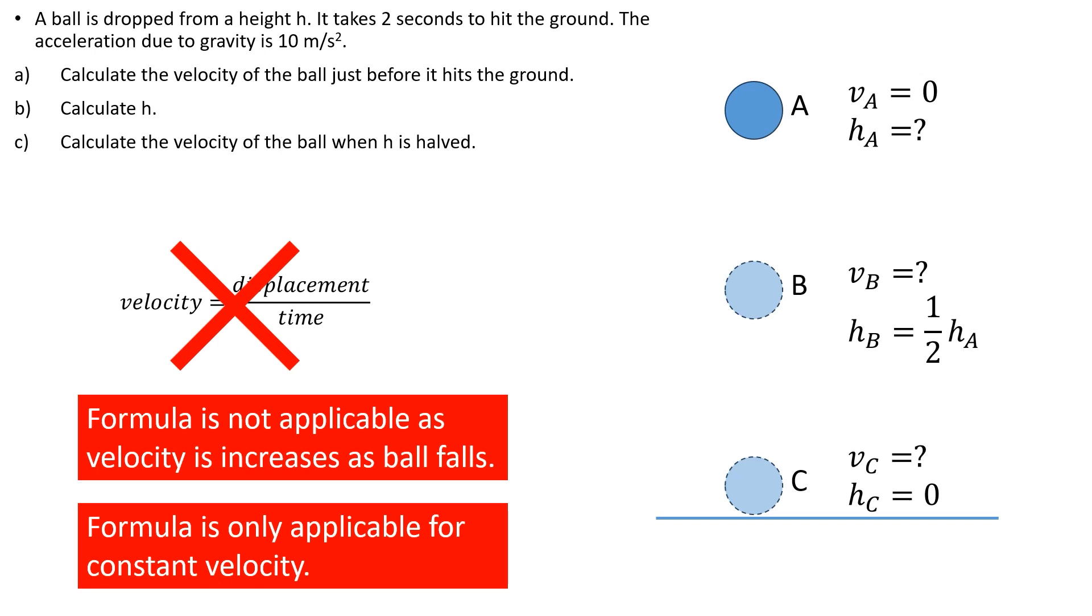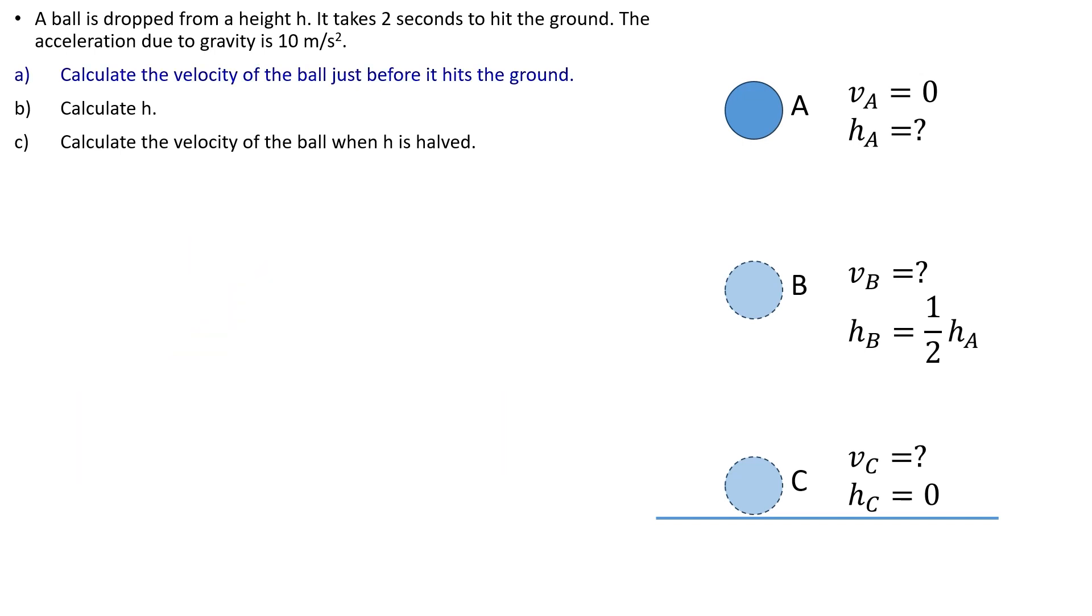Now that the variables are listed out, let us begin solving the problem. Part A: Sketch velocity time graph. Apply acceleration equals gradient of velocity time graph. Solve for velocity just before it hits the ground.